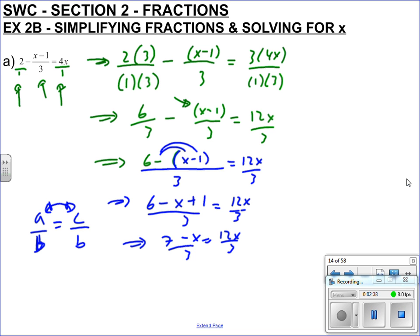A half equals a half, right? The denominators are the same, the tops must be the same as well if they're equal to each other. So here, a must equal c. So therefore the top here, 7 minus x, must be 12x, because the denominators are the same and they equal each other.